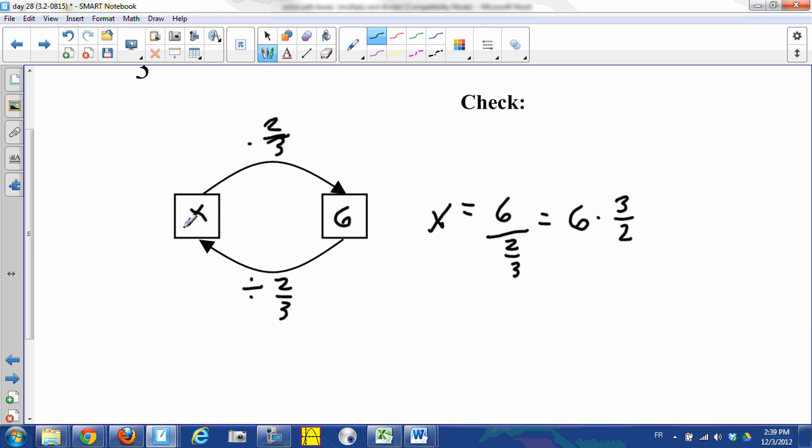Think about it: if we multiply by two-thirds and then multiply by three-halves, two-thirds times three-halves is one. Those are reciprocals, remember, multiplicative inverses.